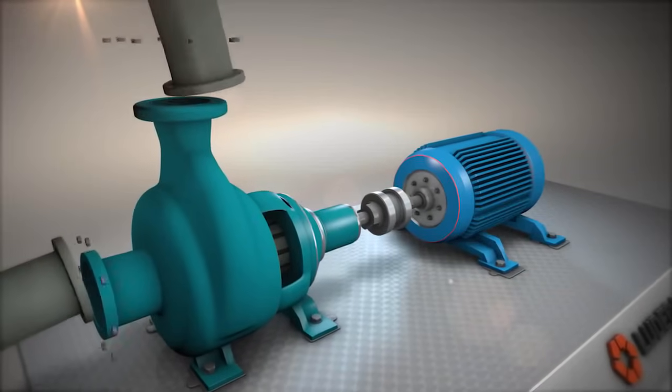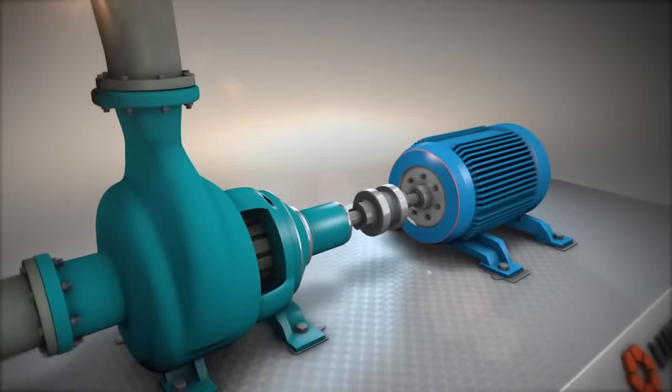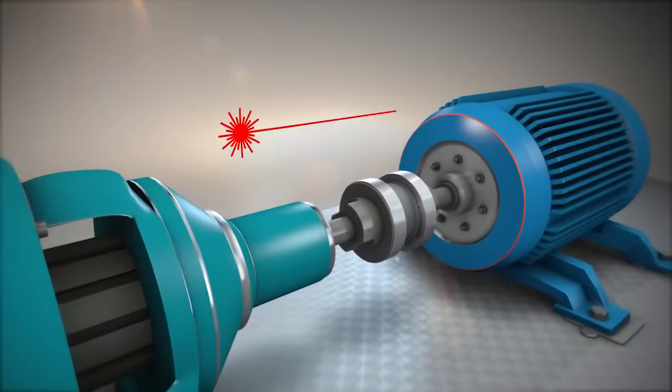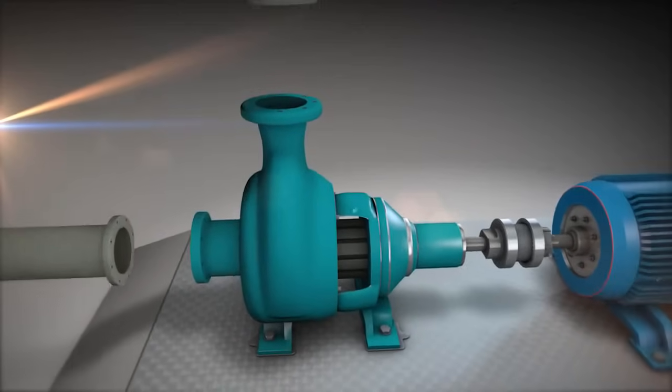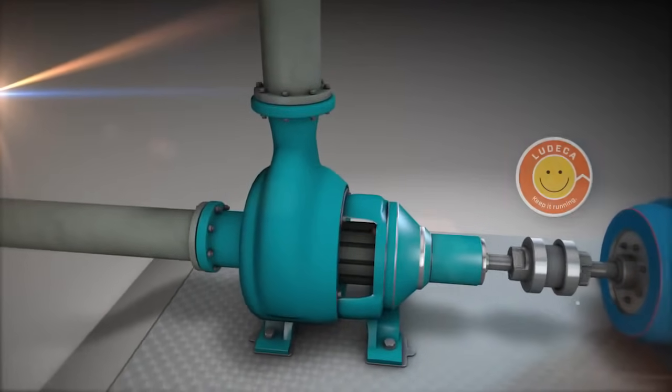It is important to check for pipe stress during pipe installation. A good laser alignment system can help you do this. Eliminating pipe stress will greatly improve the reliability of your machines.